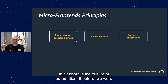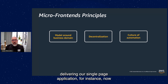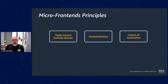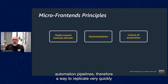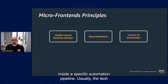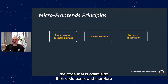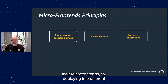Another thing to think about is the culture of automation. If before we created one automation pipeline for delivering our single-page application, now we need to iterate very often on our automation pipelines because we are creating multiple ones. The tech leadership defines which tool to use for running the automation pipeline, but the team is responsible for defining the code that optimizes their codebase and their micro-frontends for deploying into different environments.